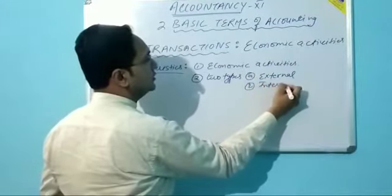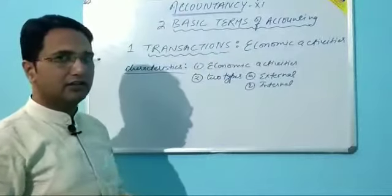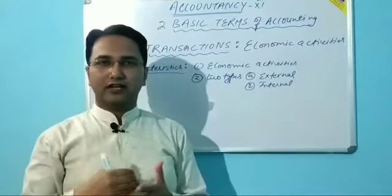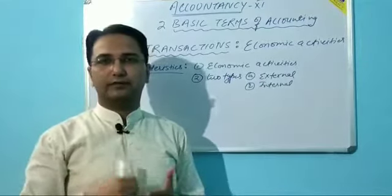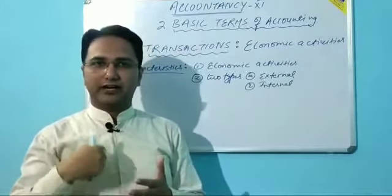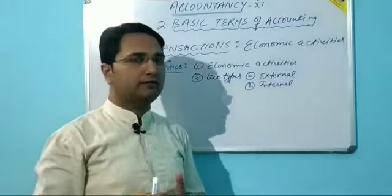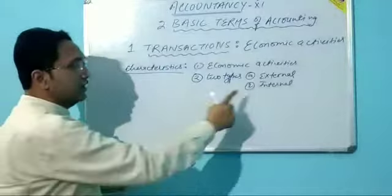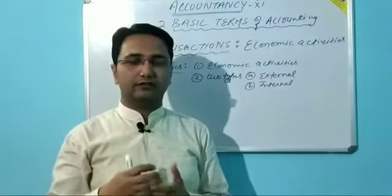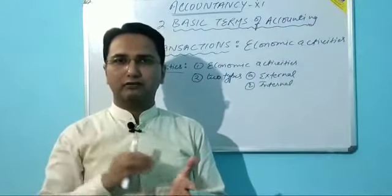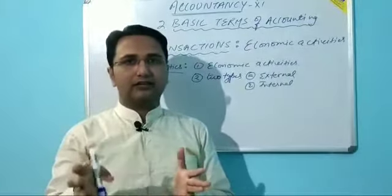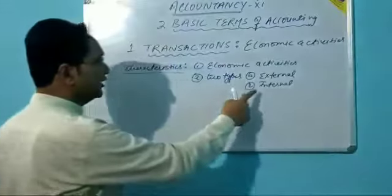The second characteristic is that there are two types of transactions: external and internal. External transactions are those which take place between the business and outside the business, meaning a third party. For example, purchasing goods for cash takes place between the business and the supplier, who is an outsider. Internal transactions are those taking place within the business organization — for example, depreciation on machinery, which is a decrease in the value of an asset.